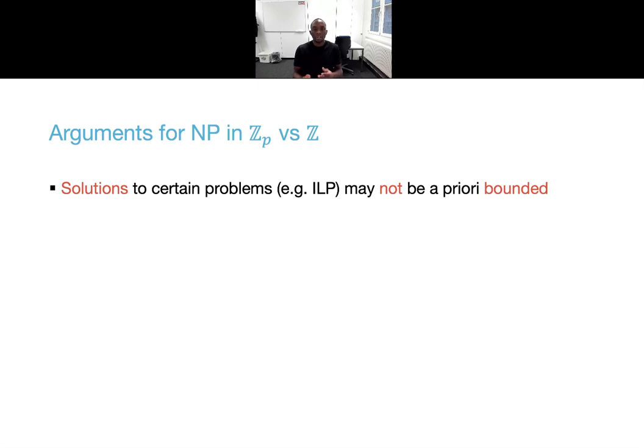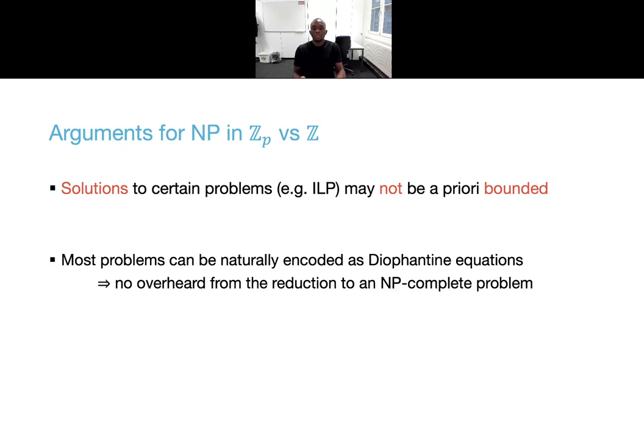It means that if the parameters are generated before the problem instance is known and the group order is too small, then one may not be able to use the arguments as the witness will be reduced modulo the group order. Compiling the problem into a circuit SAT problem can also incur significant overhead for certain problems, and it may actually be difficult to even write down an appropriate circuit for the problem.